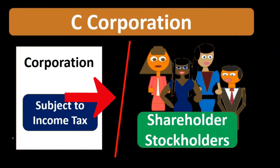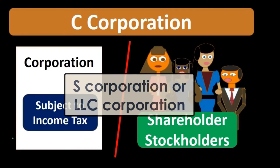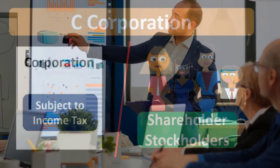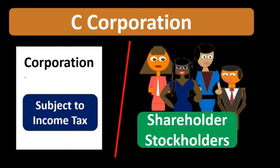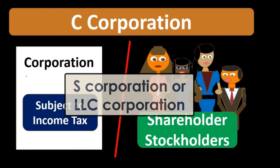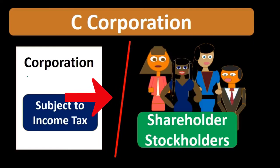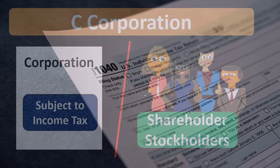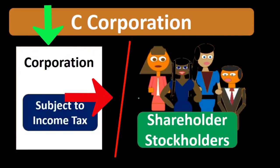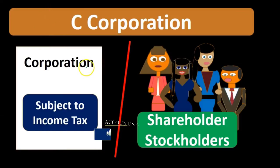In order to eliminate or reduce that double taxation while still keeping the benefits of the C corporation — maintaining liability protection and having a pass-through of taxes to the shareholders — two types of organizations can accomplish this: an S corporation or an LLC. With these structures, the income flows from the business entity to the shareholders' 1040 and is taxed there, eliminating double taxation at both the corporate and shareholder level.